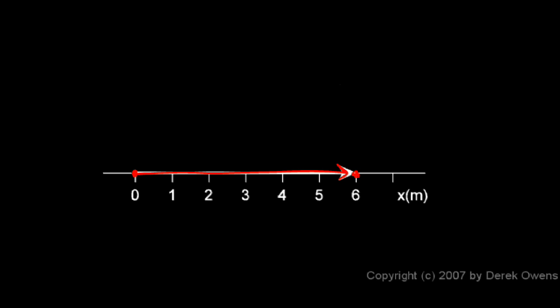So first, just picture it in your mind. It starts here at x equals 0 and it's moving to the right, which we'll call the positive direction, and it moves at a steady speed over here to x equals 6 meters. So it moves just as I drew that arrow at a steady speed along to the right.